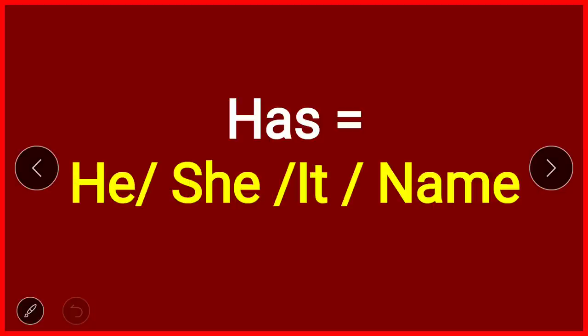Now let's learn what happens with the rest. With the rest, 'has' is used. Has is used only with he, she, it, and names. He means vah (male), she means vah (female), it means vah for neuter gender — animals, birds — and any name, whether male or female.